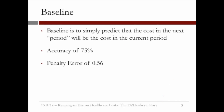To judge the quality of the analytics models we developed, we compared it with the baseline. The baseline is to simply predict that the cost in the next period will be the cost in the current period. We observed that as far as identification of buckets is concerned, the accuracy was 75% — that is, whenever we predict that the risk is bucket 3, indeed it is bucket 3. This happens 75% of the time, and the average penalty error of the baseline was 0.56.